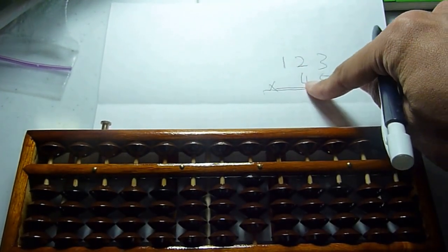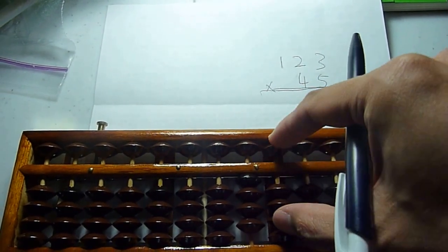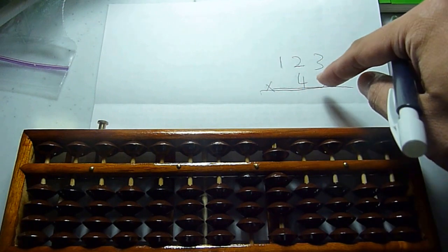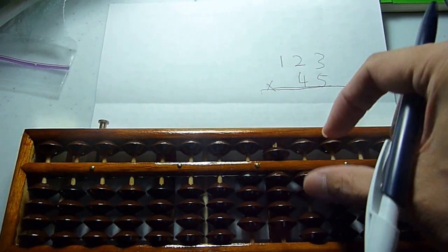Two multiplied by four is zero, eight. So zero, eight. Three multiplied by four is one, two. So you have one, two.